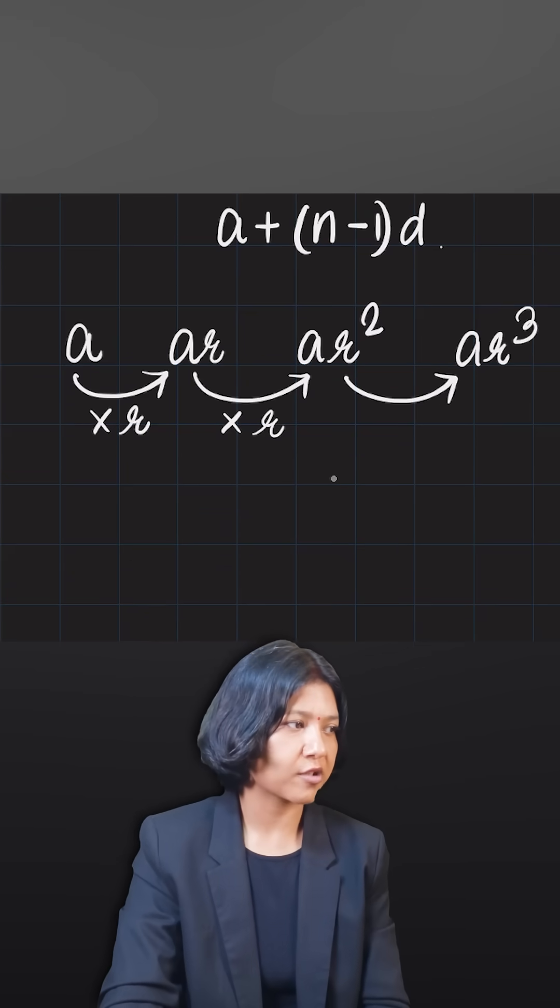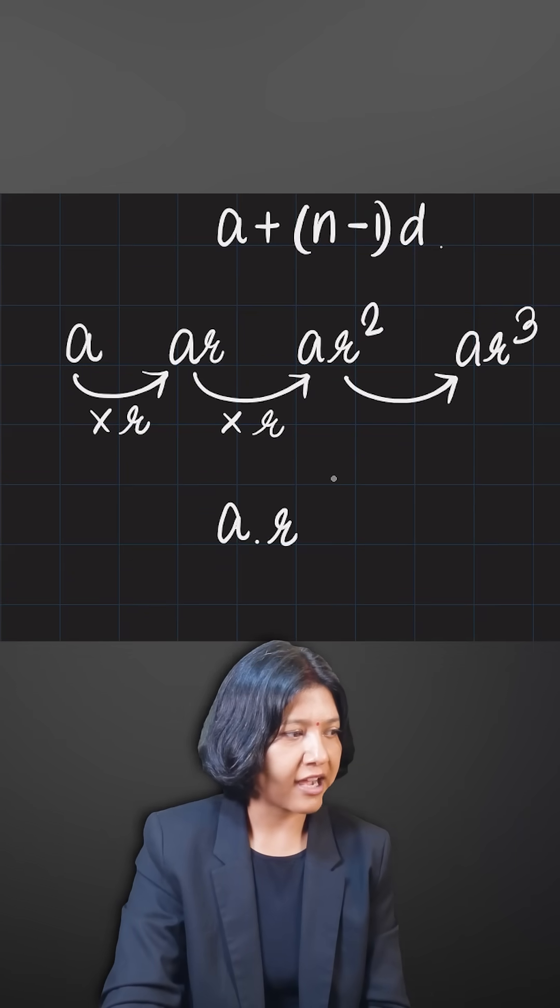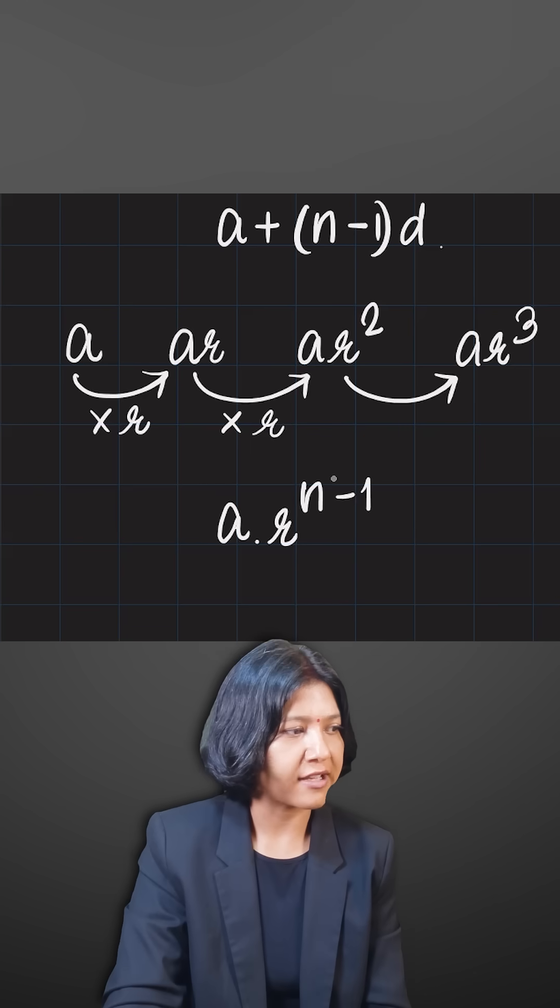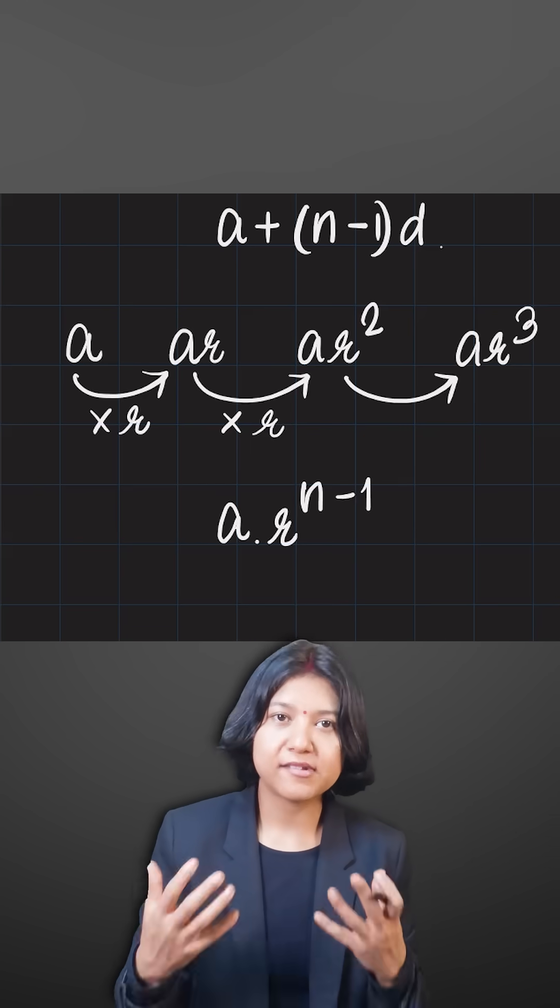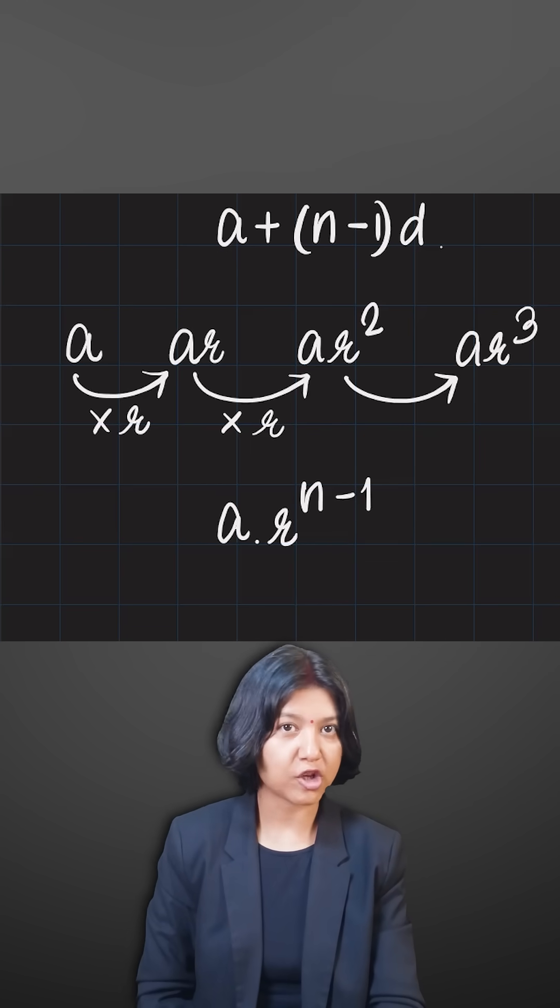To find any term in the geometric progression, you take the first term and multiply r for one less time than the position you want to reach. It's the same pattern because we are starting from the first term.